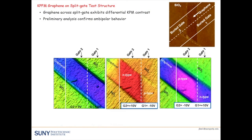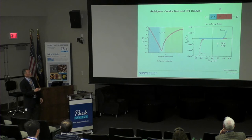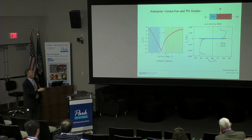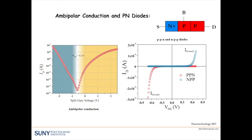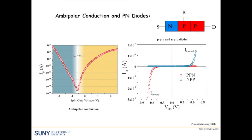Returning to our reconfigurable device, one of the first things to establish is ambipolar conduction. With all three gates biased together, we look at the transfer curve and want to see hole conduction when gates are sufficiently negative and electron conduction when sufficiently positive. Once ambipolar conduction is established, we can reconfigure the device. Biasing the three gates appropriately, we can realize an NPP junction and observe rectification in the IV curve. Switching the bias polarity gives the opposite rectification — exactly what we want to see.